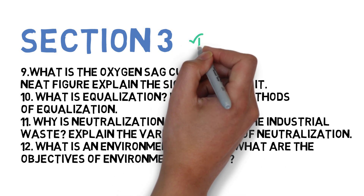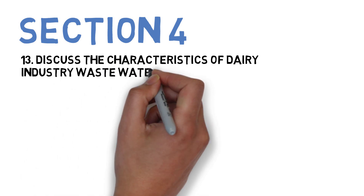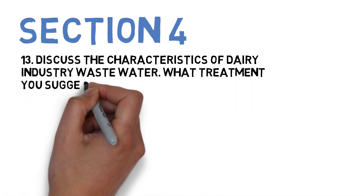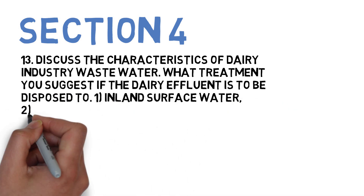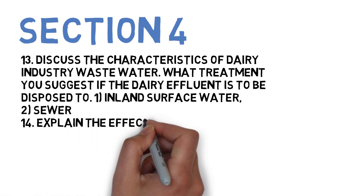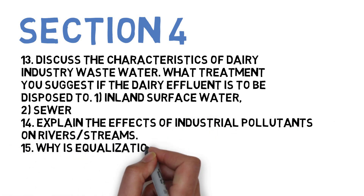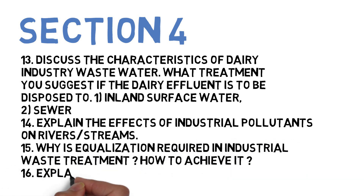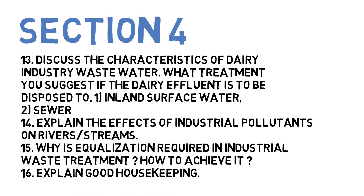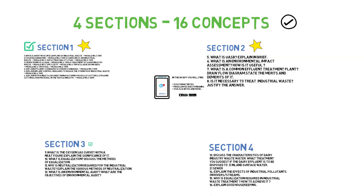Let's go to Section 4. First is discuss the characteristics of dairy industrial waste and how it is treated — suggest your opinion — considering inland surface water standards and fever standards. Next is explain the effects of industrial pollutants on rivers and streams. Next is what is equalization and why is it required for industrial waste treatment and how do we achieve it. The last question is explain good housekeeping.